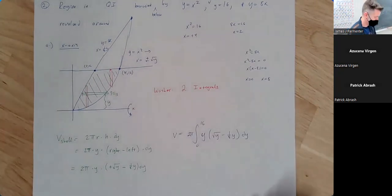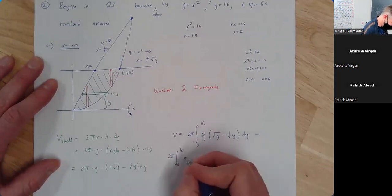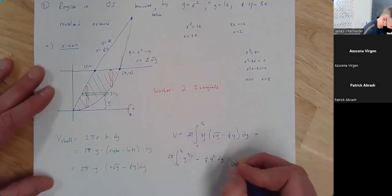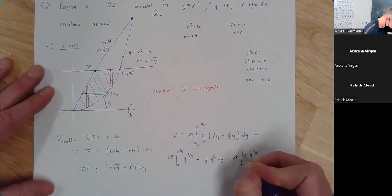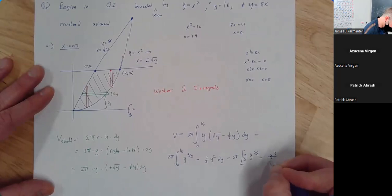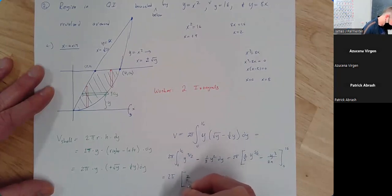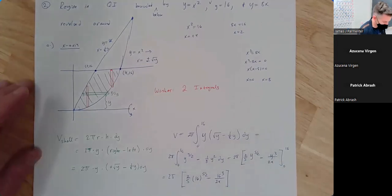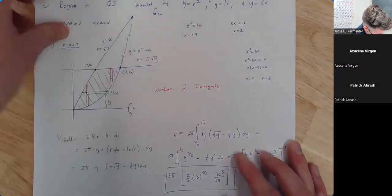Our total volume is going to be the integral from y equals 0 to y equals 16 of 2π times y times (square root of y minus y/8). Multiplying through, we'd have 2π times the integral from 0 to 16 of y to the 3/2 minus y squared/8. Then we'd get 2π times [y^(5/2) times 2/5 minus y³/24] from 0 to 16. Plugging in 16: 2/5 times 16^(5/2) minus 16³/24. It's a bit gross, but that's an answer.